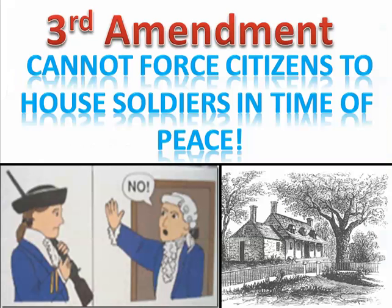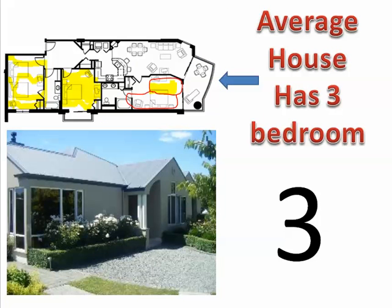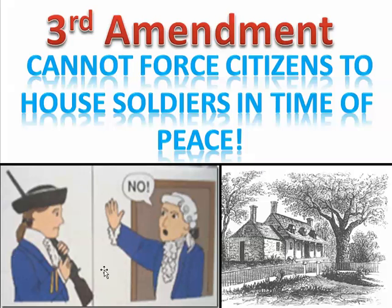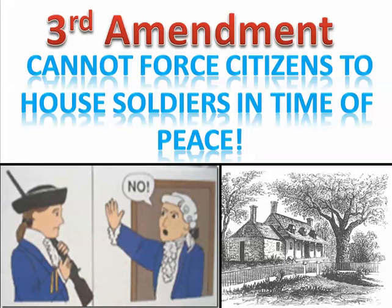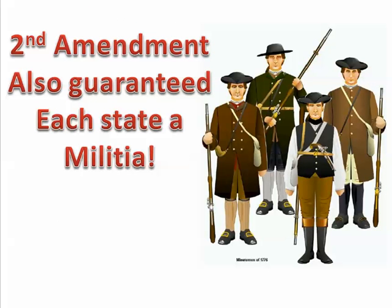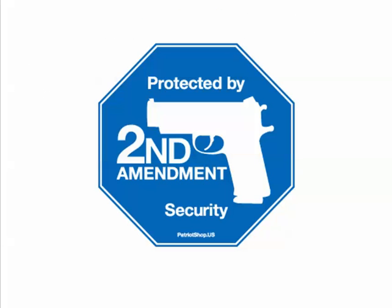The Third Amendment is the right to not have troops quartered in your homes in time of peace. British soldiers tried to stay in homes in Boston, and Parliament said they had to be quartered without charge — they ate food and lived there. Many Americans felt that was a violation of their property rights. The government cannot force you to house soldiers in your home. A good way to remember the Third Amendment is that an average household has three bedrooms — three bedrooms per house — quartering of troops. Also recall that the British government tried to take arms from the people, which is one of the reasons the Second Amendment exists.